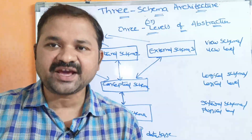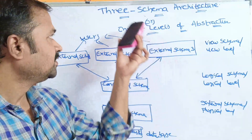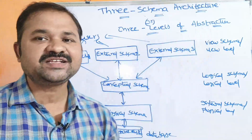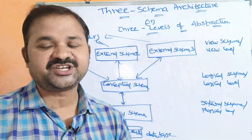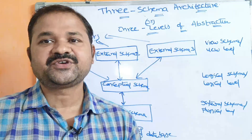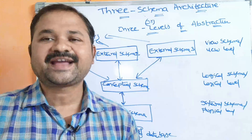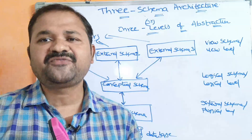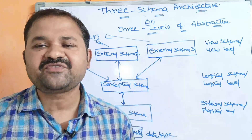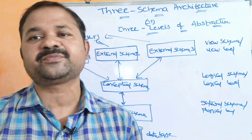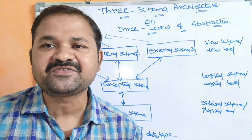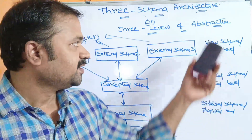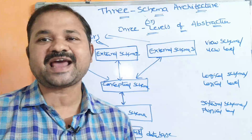In this video we are going to discuss about three schema architecture or three levels of abstraction. We know what a database is. A database contains a collection of large amount of data, but for a user, only a limited piece of information is required. The user doesn't require that vast amount of data, and for that purpose this abstraction is needed.